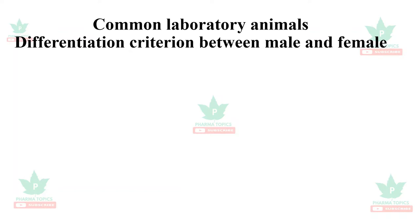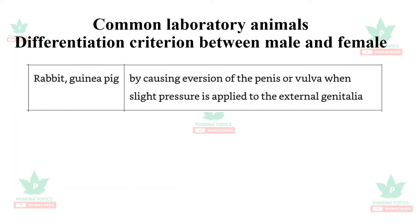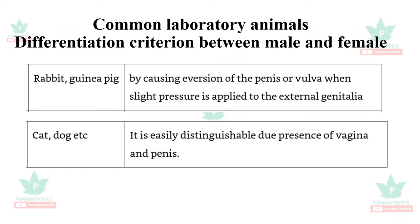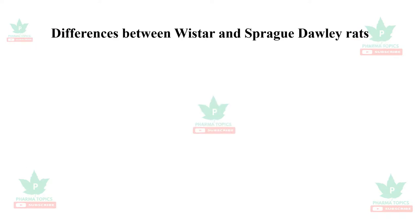Let us see the differentiation criteria between male and female in other species. In case of rabbits and guinea pigs, it can be identified by causing eversion of the penis or vulva, which involves slight pressure applied to the external genitalia. In case of cats and dogs, it is easily distinguishable due to the presence of vagina and penis.